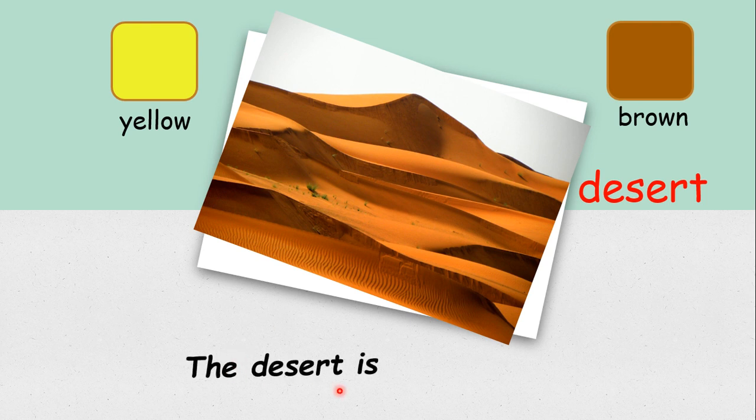This is the desert. Desert is a place which is covered with sand and it has only very little rain. 那么沙漠呢，就是一个充满沙的地方，只会下很少的雨，然后很少植物会生长在沙漠的。So what are the colors of the desert? Yellow and brown.